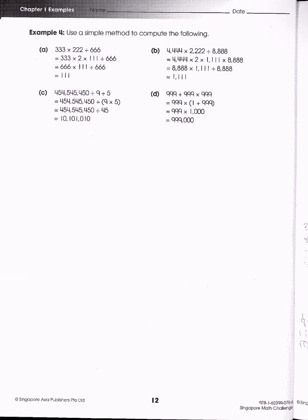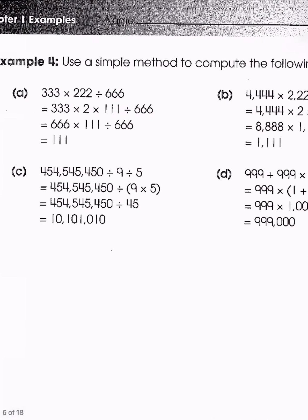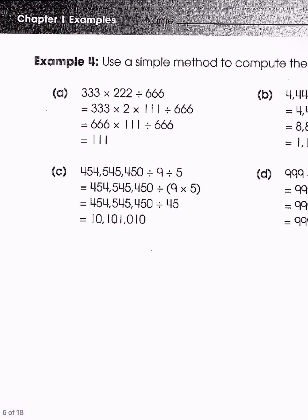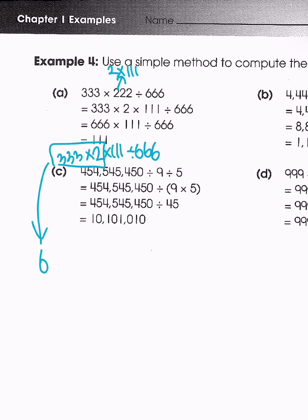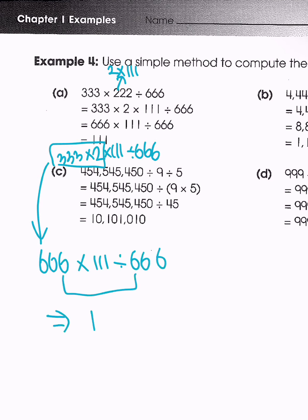Another example: use a simple method to compute the following. We can break down 222 into 2 times 111. So we write this as 333 times 2 times 111 divided by 666. Since 333 times 2 equals 666, we can simplify: 666 over 666 equals 1, and we do the remaining to get 111.